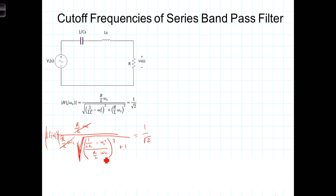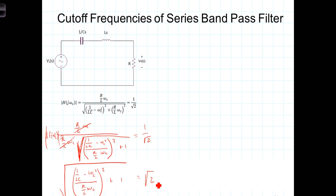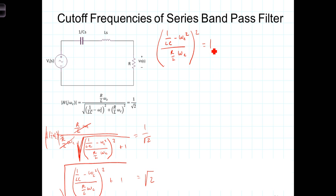We've got that the magnitude of H(j omega sub c) equals that expression, which is equal to 1 over the square root of 2, and we did that so that those terms cancel. We now have 1 over this expression, including the radical, equal to 1 over the square root of 2. So now we can equate the denominators on each side, and we get that expression equals the square root of 2. This equation is true if this term equals 1, because if it equaled 1, we'd have 1 plus 1 equals 2, giving the square root of 2 equals the square root of 2.